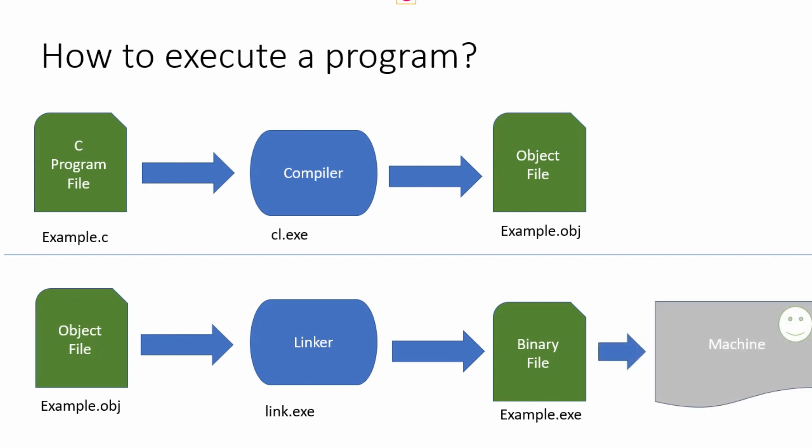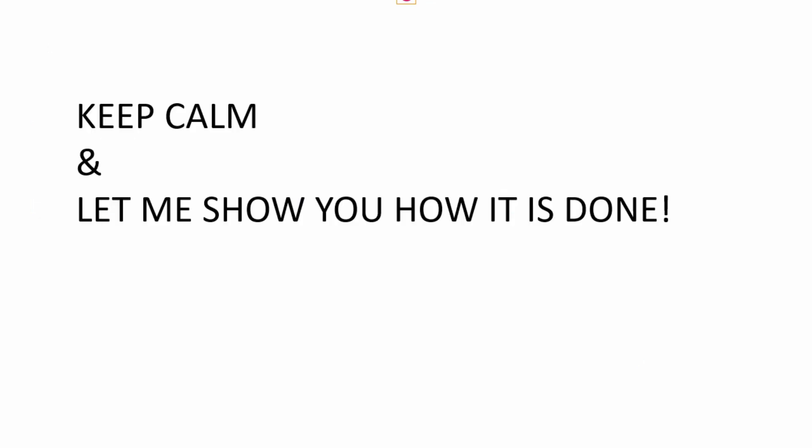We then take that object file and submit it to another program called a linker, and the linker will generate the binary executable — an .exe file — that can be executed by the machine. Moving ahead, we'll dig deeper and understand how the compiler and linker work. As we write programs we'll identify error types: compile-time errors, linking errors, and compiler errors like lexical, syntax, and semantic errors.